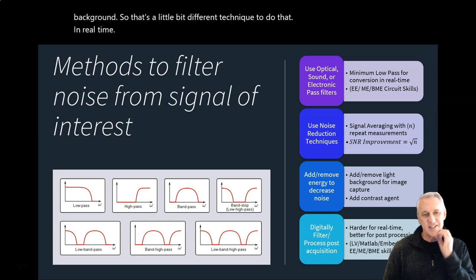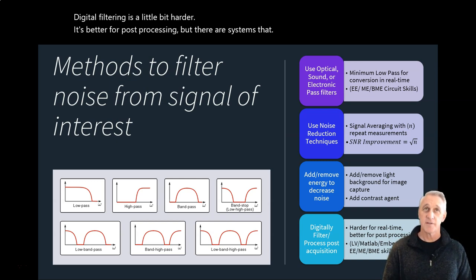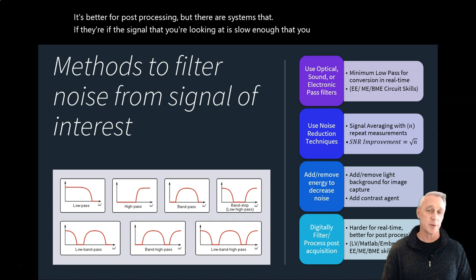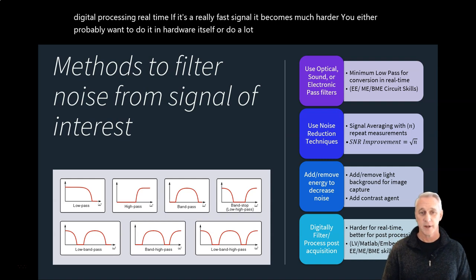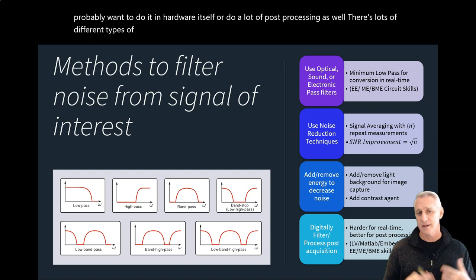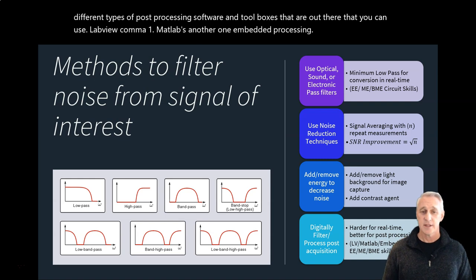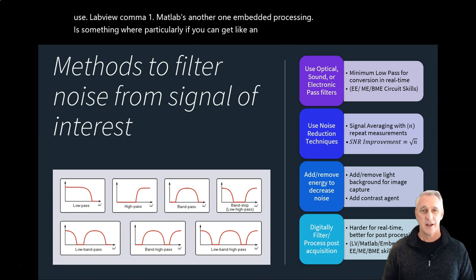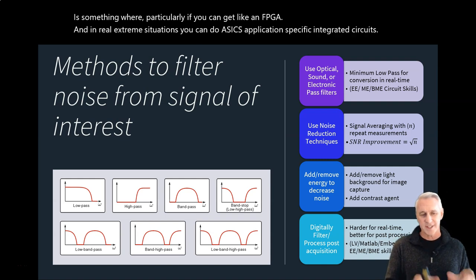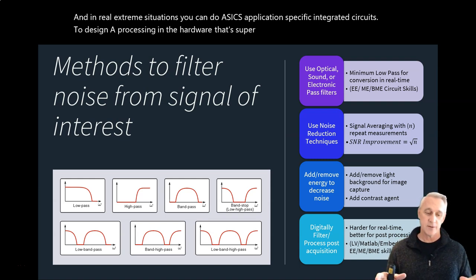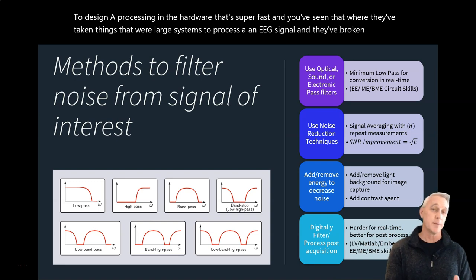Digital filtering in real-time is harder — it's better for post-processing, though it works if the signal is slow enough. For fast signals, hardware filtering or post-processing is preferred. Tools include LabVIEW and MATLAB. For embedded processing, FPGAs or ASICs — application-specific integrated circuits — can do real-time processing at very high speeds, allowing systems like EEG processors to be miniaturized to a single chip.